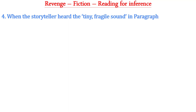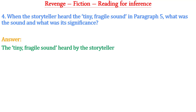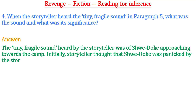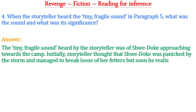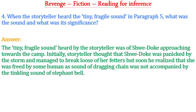Question four: When the storyteller heard the tiny fragile sound in paragraph five, what was the sound and what was its significance? The answer is: the tiny fragile sound was of Shuidok approaching towards the camp. Initially the storyteller thought Shuidok had panicked by the storm and broken loose, but soon he realized she had been freed by a human, as the sound of dragging chain was not accompanying the tinkling sound of the elephant bell.